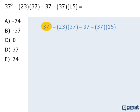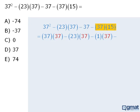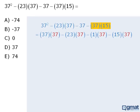First notice that we can take 37 squared here and rewrite it as 37 times 37. Next we will take 23 times 37 and leave it as it is. 37 can be rewritten as 1 times 37, and we can rewrite 37 times 15 as 15 times 37.